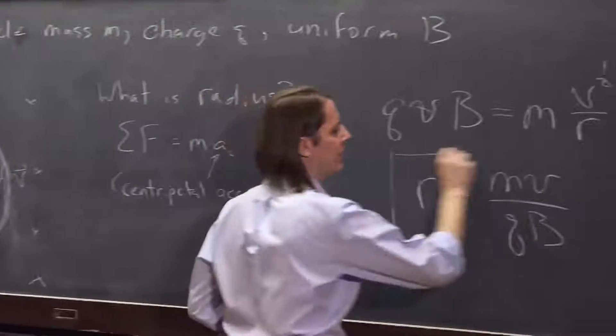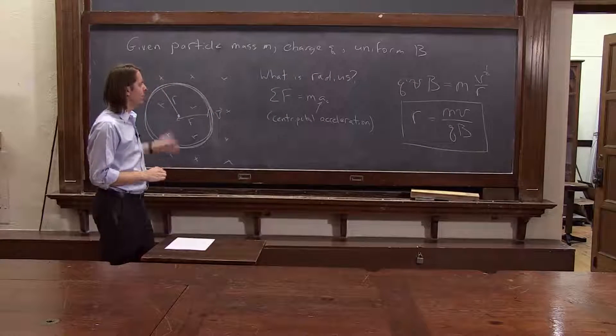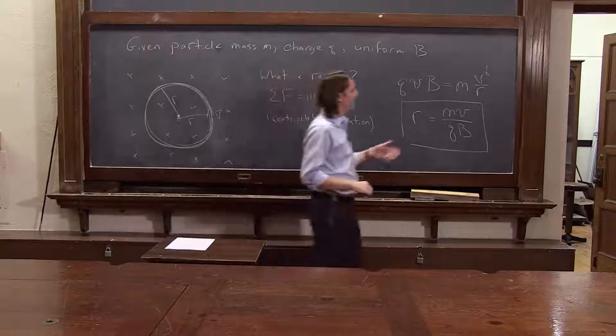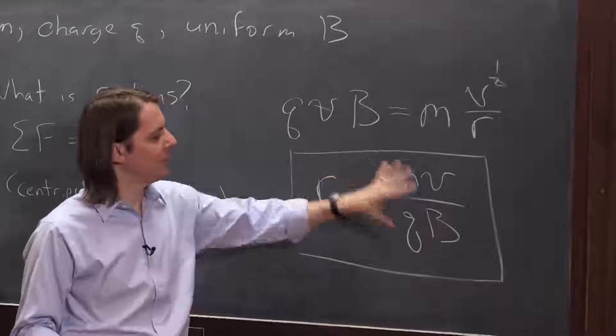So that's worth memorizing, especially when you're taking a class in magnetism. The radius of the circle of a charged particle in a uniform field is m v over q b. It even rhymes, m v over q b. It kind of makes sense, too, if you look at it.